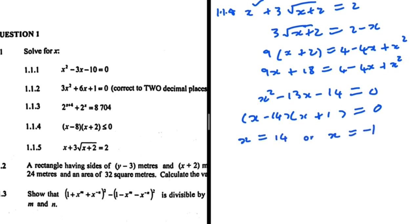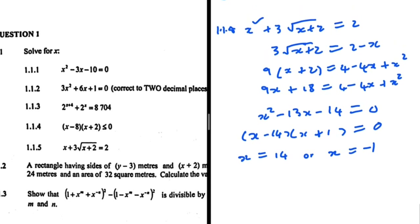When you square both sides you can introduce extraneous solutions that are not actually valid, so we need to substitute both x equals 14 and x equals minus 1 back into the original equation to see which one actually gives us 2.